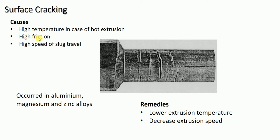Surface cracking can also occur because of high friction and high speed of slug travel. Whenever there is excessive friction between the slug and the internal walls of the container during direct extrusion, surface cracking takes place. If the speed is high, friction will again be high, and high friction leads to the potential formation of surface cracking. Generally, surface cracking occurs in aluminium, magnesium, and zinc alloys.